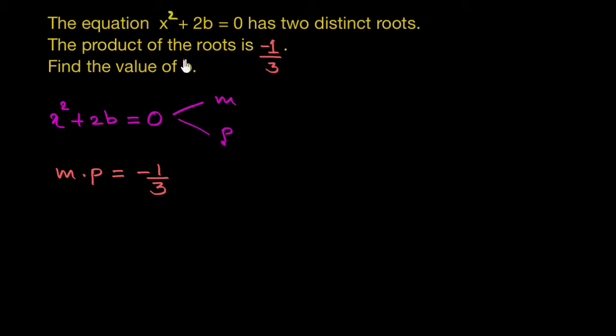Now we need to find the value of b. So basically we need to find the value of this constant part 2b, and once we have that we can divide it by 2 and get the value of b. So there has to be some relation, some connection between the constant part of the quadratic equation and the product of roots.